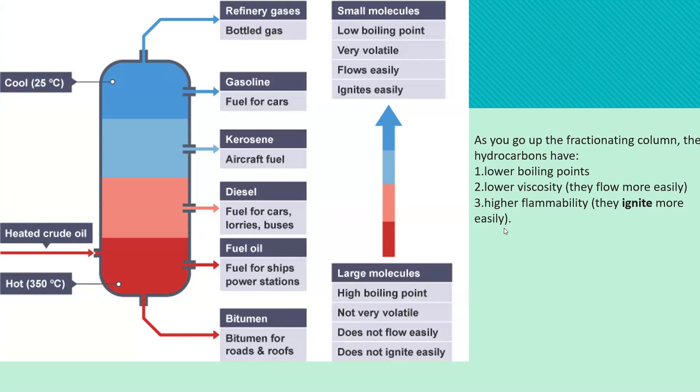As you can see on the diagram here, the bottom is around 350 degrees Celsius. Towards the middle, it gets warmer, then cooler, and then towards the top, it heads to around 25 degrees Celsius. This is where gasoline, fuels for cars, and refinery gases exit.